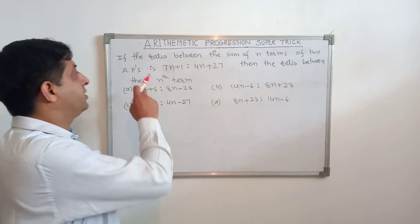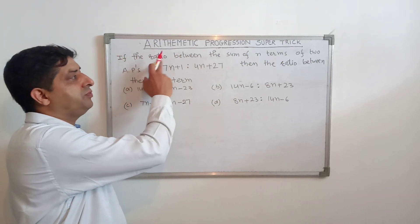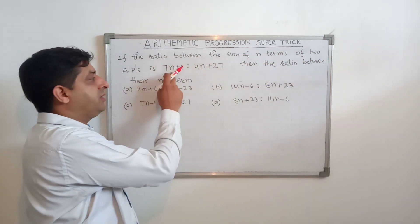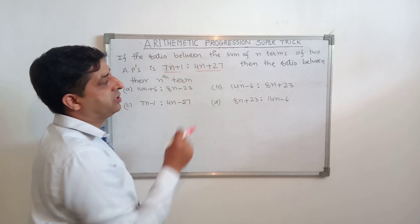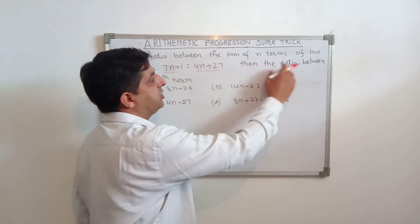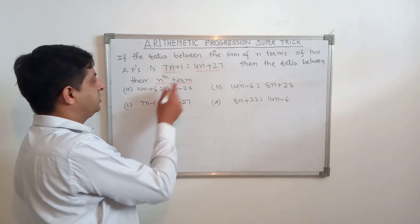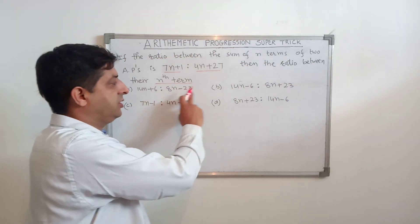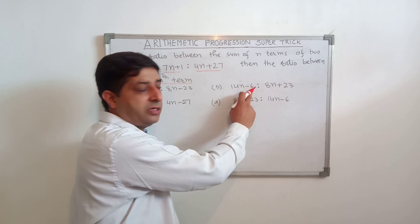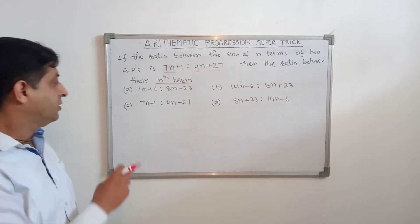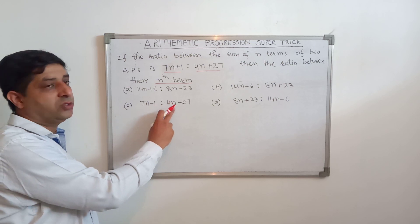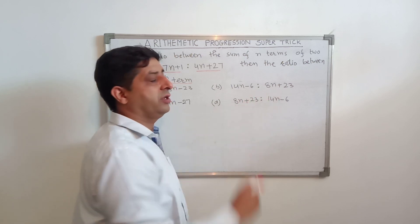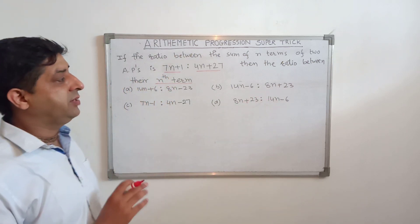Let's try one more sum of the same type. If the ratio between the sum of N terms of 2 APs is (7N + 1) : (4N + 27), then the ratio between their Nth terms is — option A: (14N + 6):(8N − 23), option B: (14N − 6):(8N + 23), option C: (7N − 1):(4N − 27), option D: (8N + 23):(14N − 6).